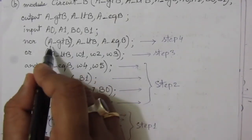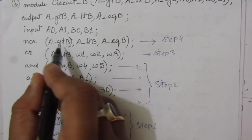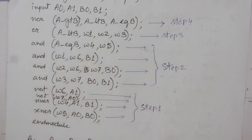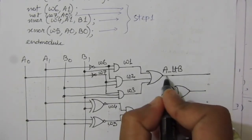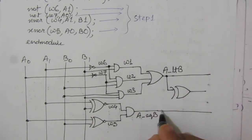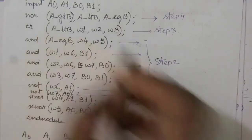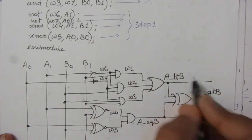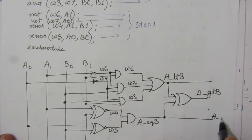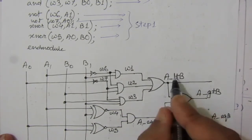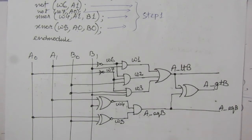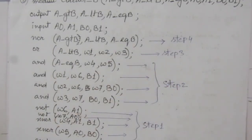In step four we find a_gtb by doing the NOR operation between a_ltb and a_eqb. Draw a NOR gate with one line from a_ltb and another from a_eqb to get a_gtb. So we have three outputs: a_eqb, a_ltb, and a_gtb. This completes the logic circuit for the second Verilog gate-level description.